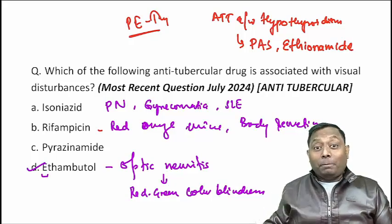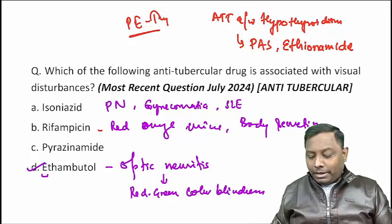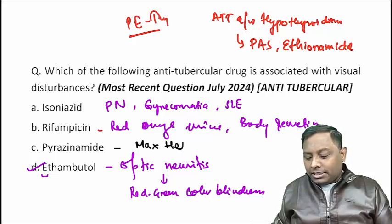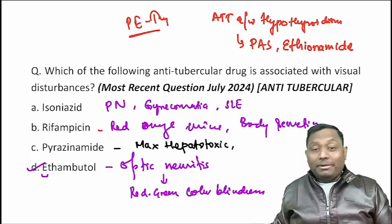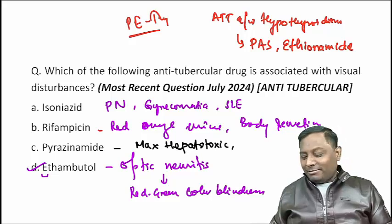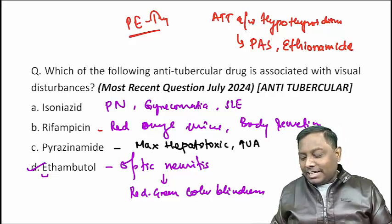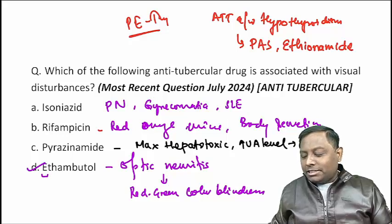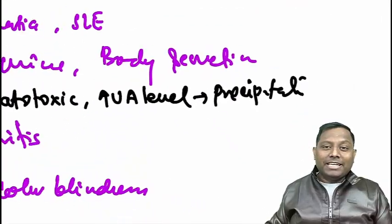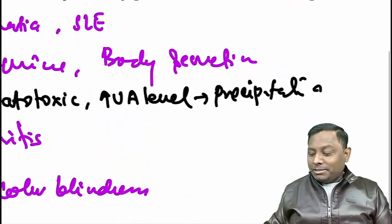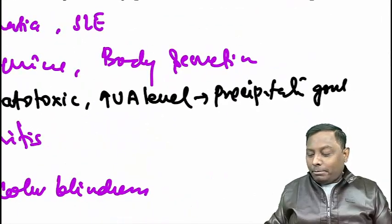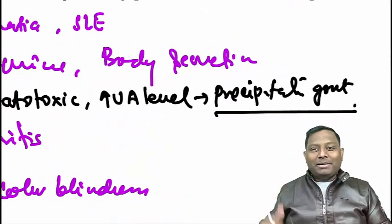Pyrazinamide — I affectionately call it 'piyar' — pyrazinamide is very toxic. It causes maximum hepatotoxicity. The second important thing: pyrazinamide causes pain because it increases uric acid levels, and when uric acid levels rise, it can precipitate gout. So remember: pyrazinamide causes hepatotoxicity and also precipitates gout.